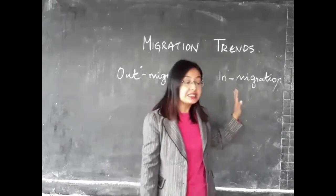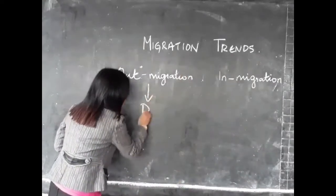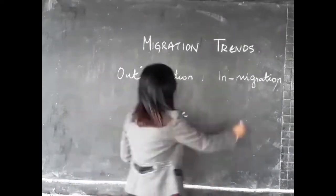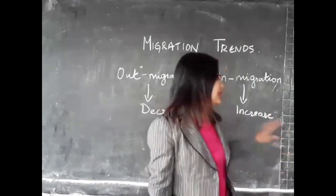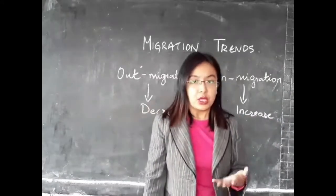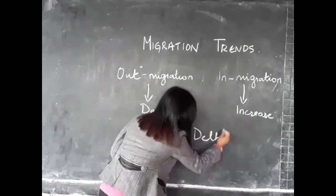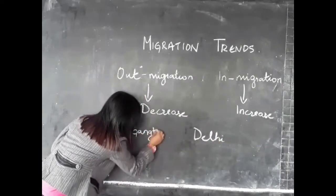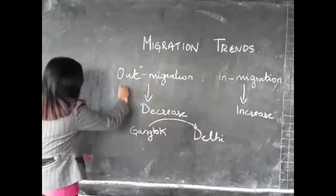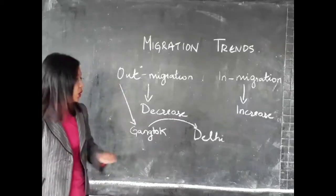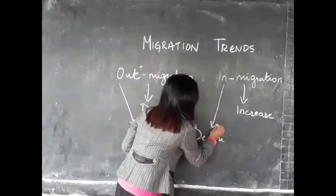Both out migration and in migration affect the population of a region. Out migration leads to a decrease in population. For example, after your ISC gets over, you would want to go out of Gangtok and study somewhere else, like Delhi. Since you are moving out of Gangtok, that is considered out migration. And since you are moving into Delhi, that is considered in migration for Delhi.